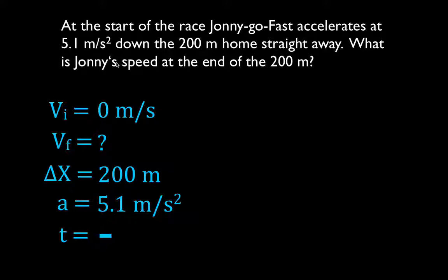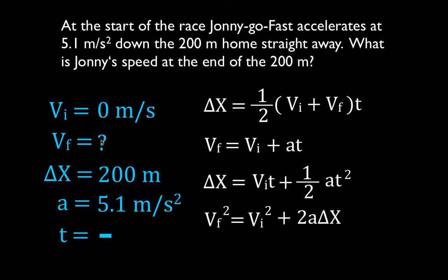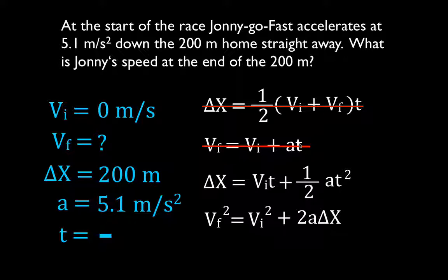You're given three variables and solving for the fourth. We need a kinematic equation that is solved for the final velocity and has the other three variables in it. The first equation has final velocity but requires time, which we don't know. The second equation also has final velocity but requires time. The third equation doesn't have final velocity and also has time. The fourth equation has final velocity, and we know the initial velocity is 0, the acceleration, and the change in position. This is our equation.